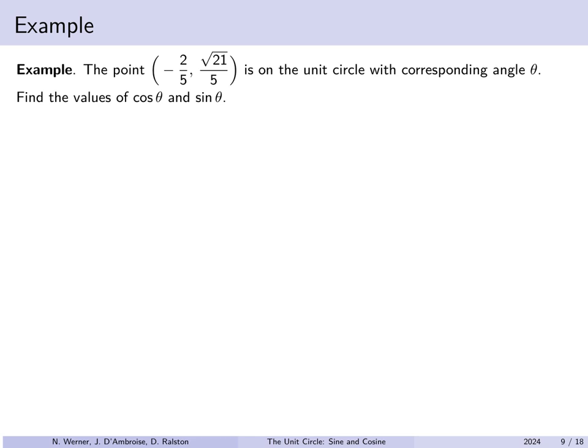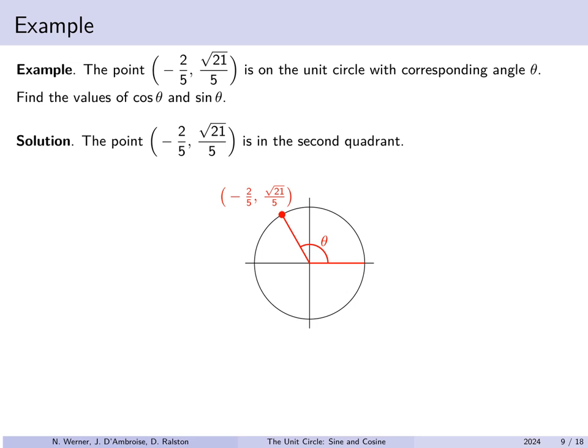If you wished to verify that this point was on the unit circle you would merely check that x squared plus y squared equals 1. The point is in the second quadrant because the x coordinate is negative and the y coordinate is positive — we went left and up, which is quadrant 2. The x coordinate is negative 2/5 and the y coordinate is root 21 over 5. Since we're on the unit circle, the cosine of the angle is just the x coordinate by definition. So cos theta equals negative 2/5 and sine theta equals root 21 over 5.